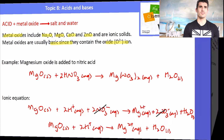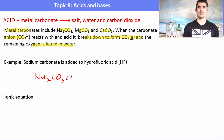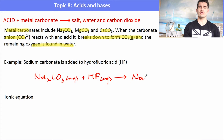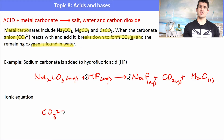If an acid reacts with a metal carbonate, the products are a salt, water, and carbon dioxide. Metal carbonates include sodium carbonate, magnesium carbonate, and calcium carbonate. The CO₃²⁻ ion breaks down to carbon dioxide, and the extra oxygen ends up in the water molecule. For example, sodium carbonate (aqueous) added to hydrofluoric acid HF forms sodium fluoride, CO₂, and water. We need to balance: two sodiums on the left means a 2 in front of NaF and a 2 in front of HF.